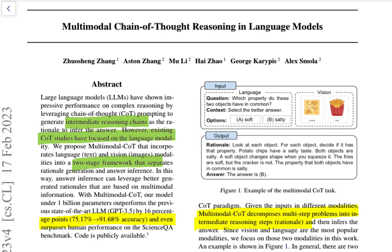Welcome back to the channel. In this video we will discuss a paper called Multimodal Chain of Thought Reasoning in Language Models. Large language models have shown impressive performance on reasoning by chain of thought prompting. However, existing chain of thought studies have primarily focused on language models. This paper proposes a new method called multimodal chain of thought that incorporates language and vision inputs.